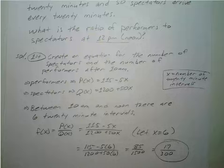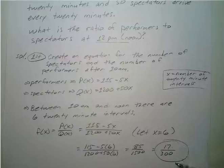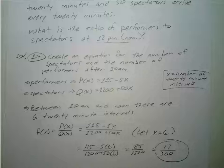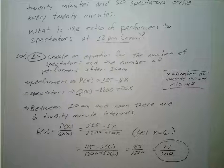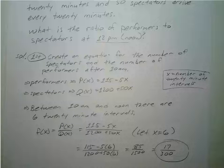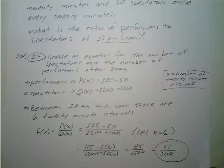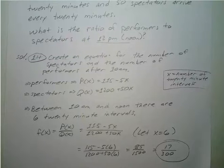So for every 17 performers, there are 300 spectators. If you are still writing, feel free to press pause, but we're going to go ahead and move on to our next example.